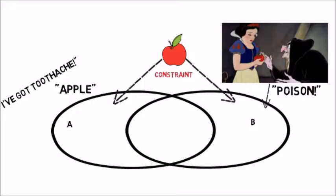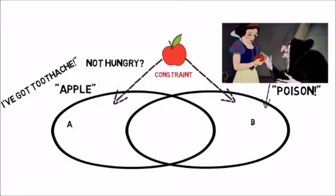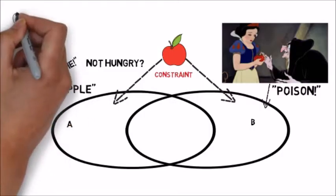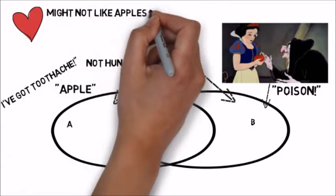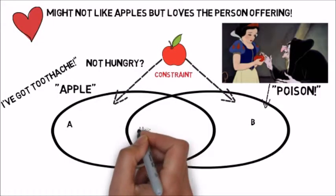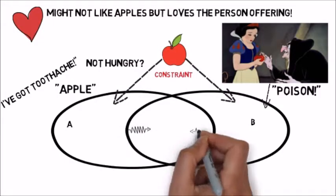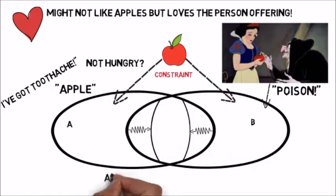So person A says 'apple,' person B says 'poison.' Equally, one might be hungry and the other not, or one might have toothache. Or one's enthusiasm and desire to talk about apples or eat them has more to do with one's enthusiasm and desire for the other person rather than the apple.